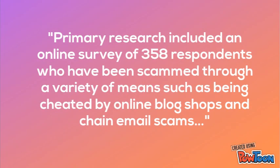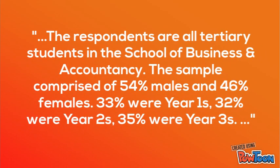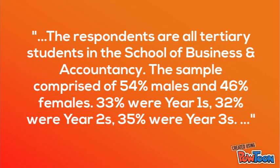Here's an example of how it should look in your report. Primary research included an online survey of 358 respondents who have been scammed through a variety of means, such as being cheated by online blog shops and chain email scams. The respondents are all tertiary students in the School of Business and Accountancy. The sample comprised of 54% males and 46% females. 33% were year ones, 32% were year twos, 35% were year threes.